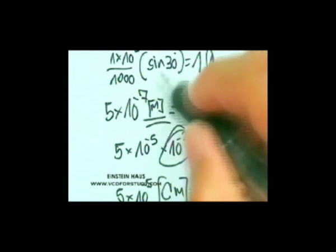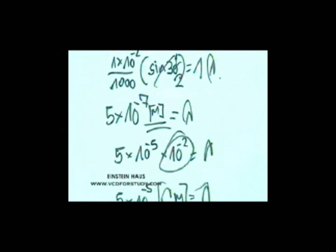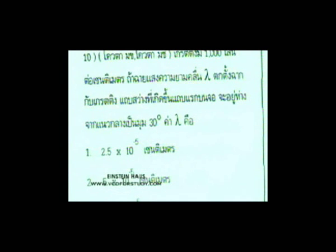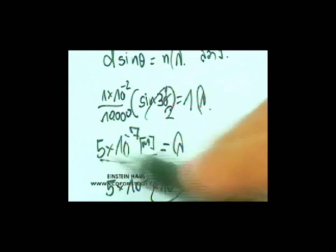d คือ 10 ลบ 2 cm นั่นเอง คือ 10 ลบ 2 นะครับ แก้เป็น cm ได้ 5 x 10 ลบ 5 cm และ sin 30 เป็น 1/2 นะครับ ตัวนี้ก็เป็น 5 x 10 ลบ 7 เมตร อันนี้แก้โจทย์ว่า Grating มีหมื่นเส้นต่อ cm นะครับ ตัวจริงต้องเป็นหมื่นเส้น